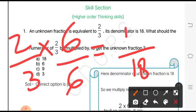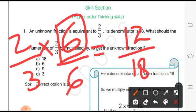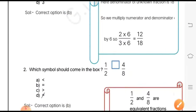The question asks us what should the numerator of 2 by 3 be multiplied by? That means what is the number which when multiplied to 2 by 3 gives us the unknown fraction? So the number is 6. The correct option is b.